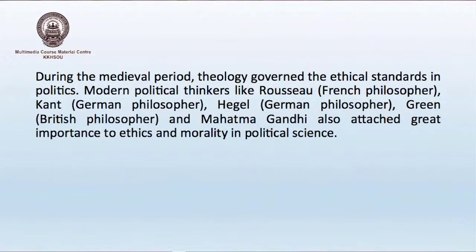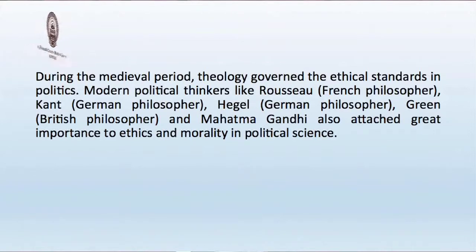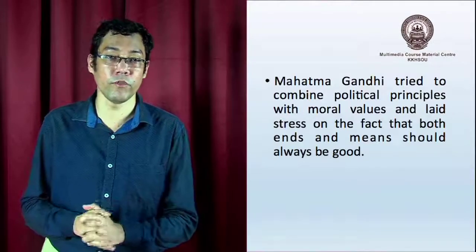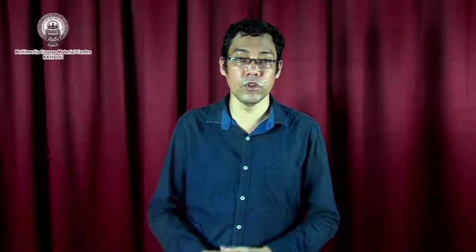During the medieval period, theology governed the ethical standards and politics. Modern political thinkers like Rousseau, a French political philosopher, Kant and Hegel, German philosophers, Green, a British political philosopher, and Mahatma Gandhi, all attached great importance to ethics and morality in political science. Modern writers also speak of the close relationship between ethics and political science. Mahatma Gandhi tried to combine political principles with moral values and laid stress on the fact that both ends and means should always be good, thus establishing an integral connection between ethical means and ethical aims.